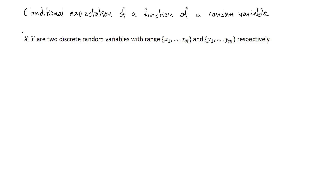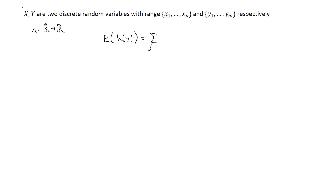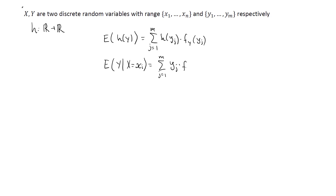Let's begin with the case of two discrete random variables x and y, where h is a function from R to R. We know how to find the expected value of a function of y — this is simply equal to the sum over all possible values of y of h(y_j) multiplied by the PMF of y. We also know how to calculate the conditional expectation of y given that x takes a specific value x_i, which equals the sum over j of y_j times the conditional mass function of y_j given x_i.